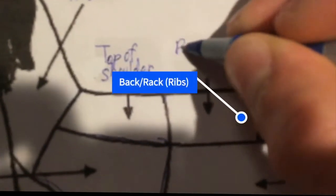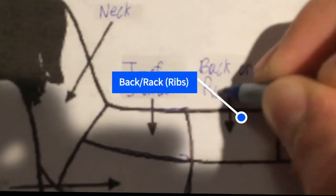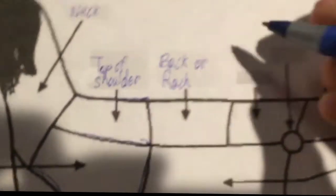Let's go up here. Here's the back or the rack, which is the ribs. And that's in this section right here.